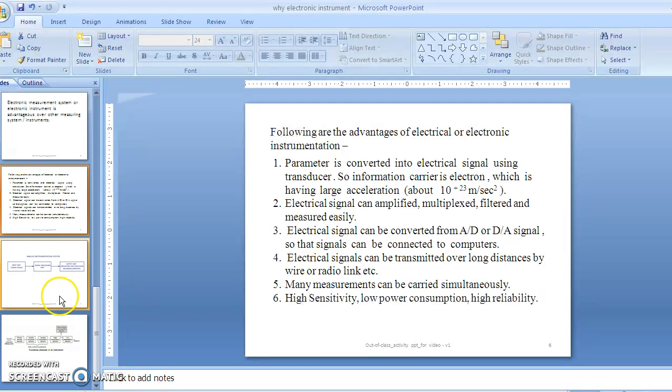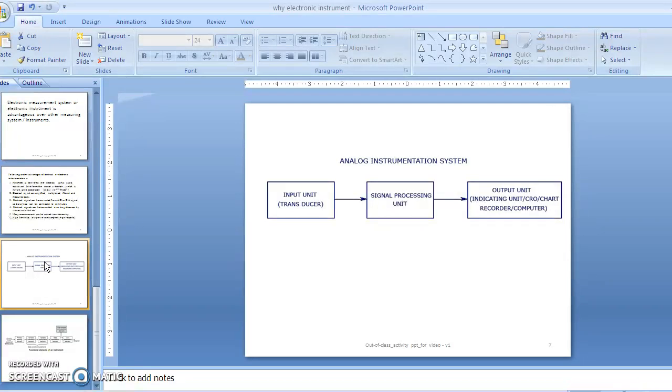The block diagram for an electronic measurement system includes: first, a transducer block, then a signal processing block, normally called a signal conditioning block. The transducer converts one form of energy into another form, normally electrical. Then that electrical signal is conditioned—it will be amplified, rectified, filtered—and then it is given for indication or meter reading.